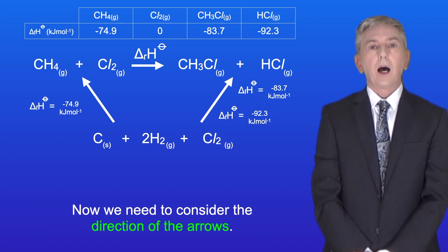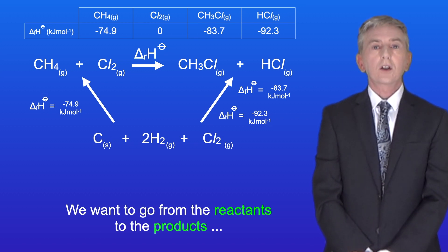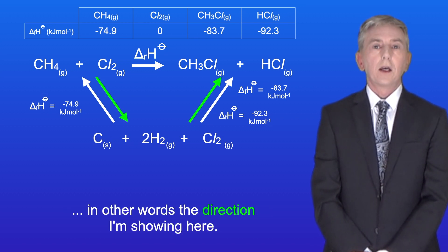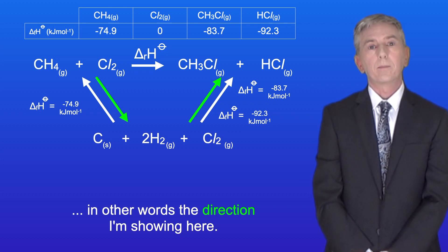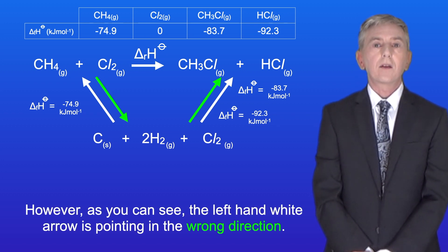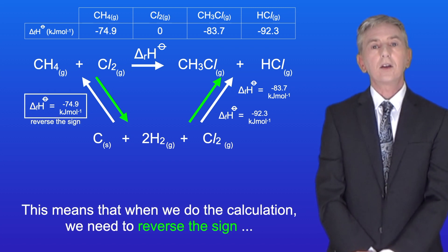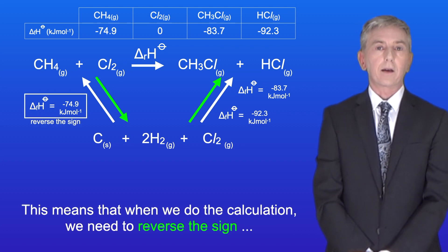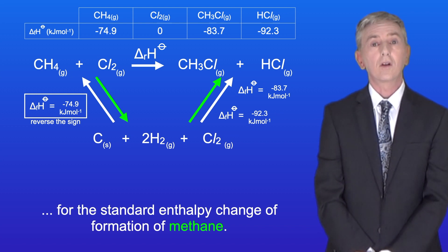Okay, now we need to consider the direction of the arrows. We want to go from the reactants to the products, in other words, the direction I'm showing here. However, as you can see, the left-hand white arrow is pointing in the wrong direction. This means that when we do the calculation, we need to reverse the sign for the standard enthalpy change of formation of methane.